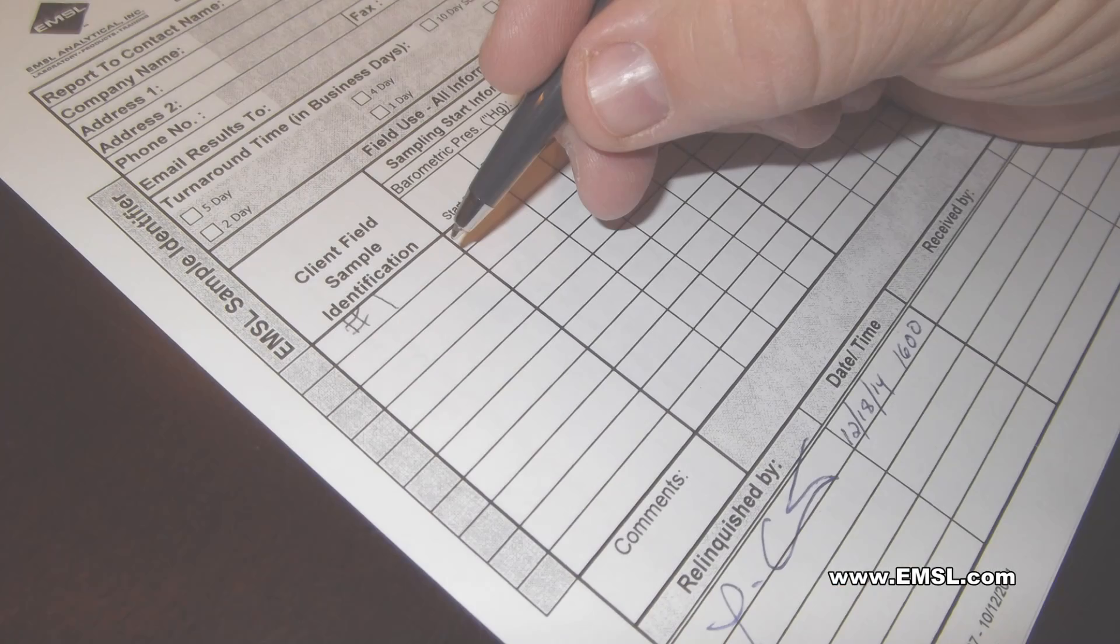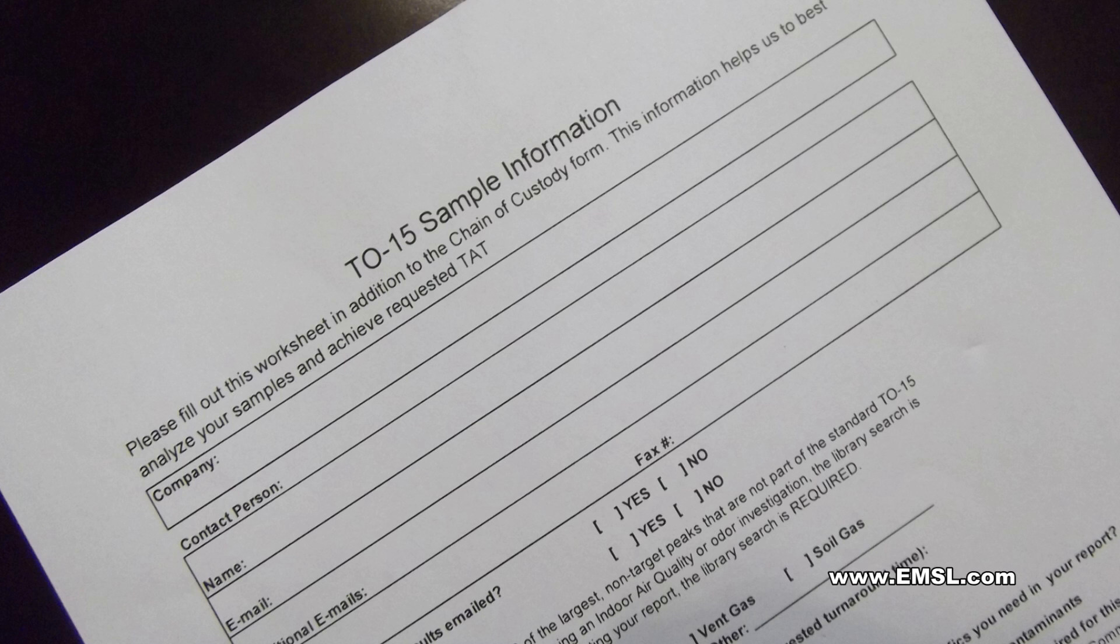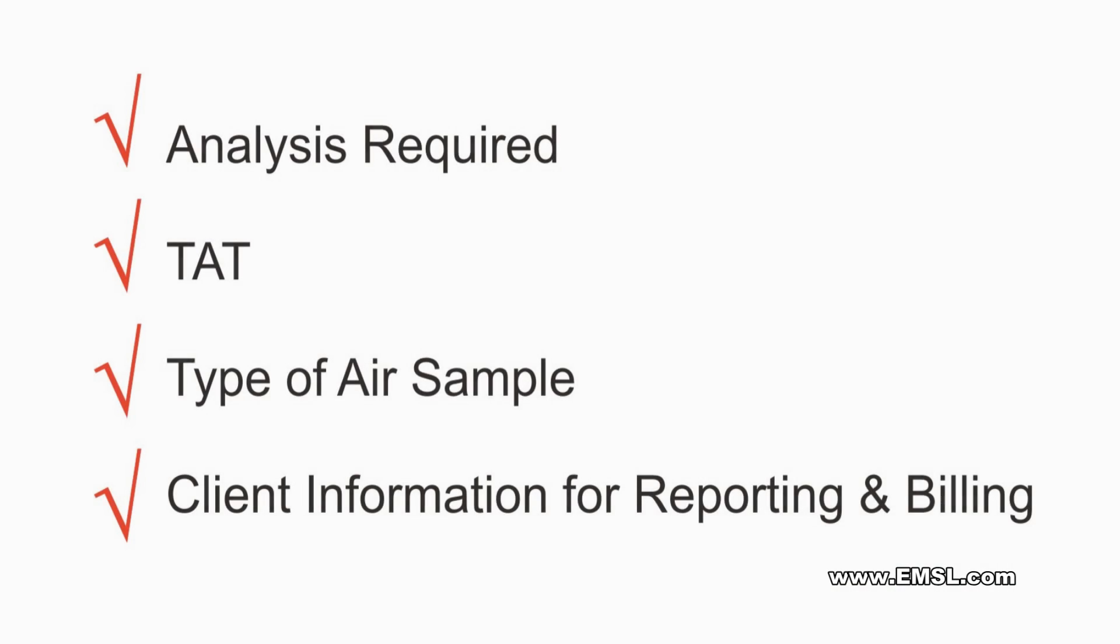Fill out the chain of custody and TO15 sampling information form, making sure to indicate at a minimum the analysis you require, turnaround time, and type of air sample you have collected.